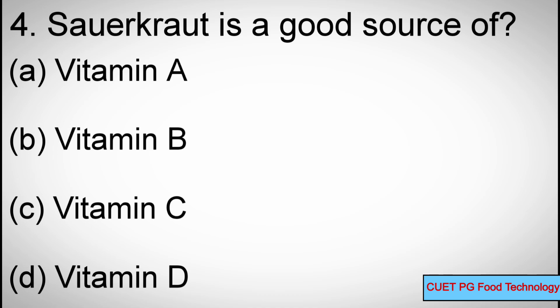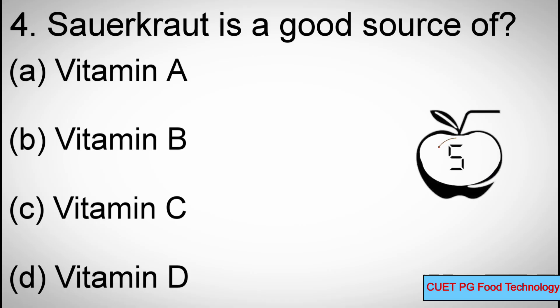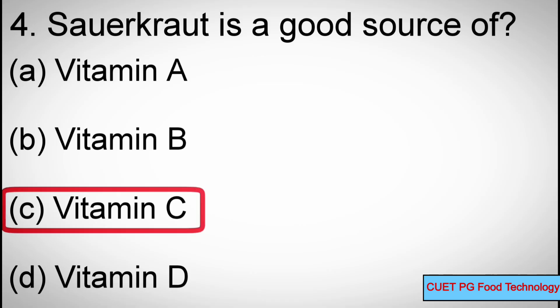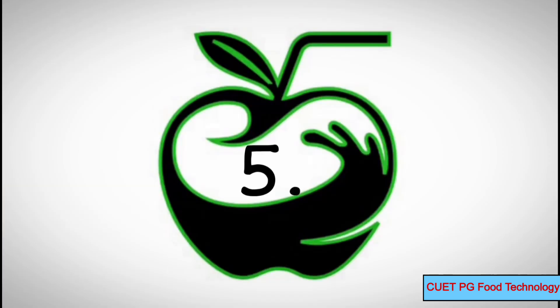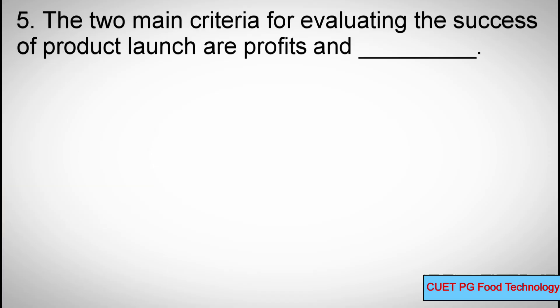Question number four: Sour crop is a good source of which vitamin? Options: A) Vitamin A, B) Vitamin B, C) Vitamin C, D) Vitamin D. Correct answer: C) Vitamin C.